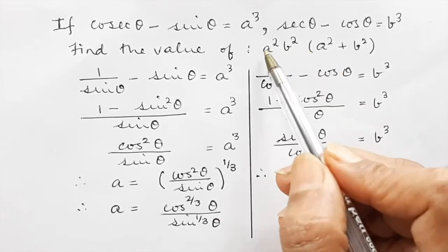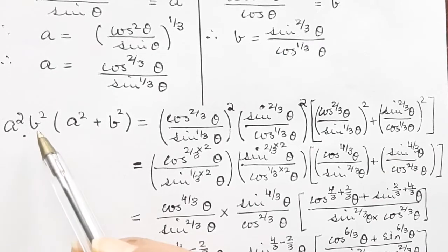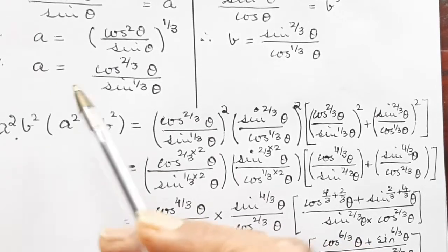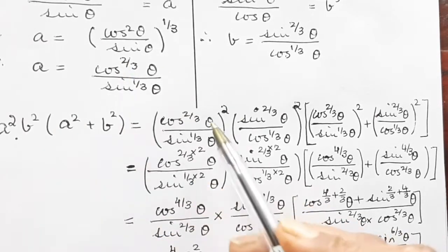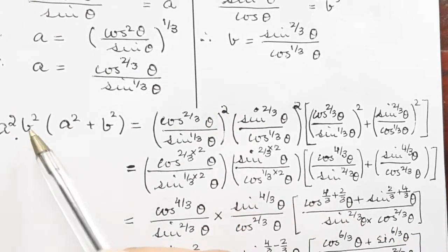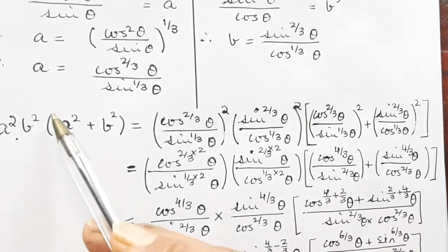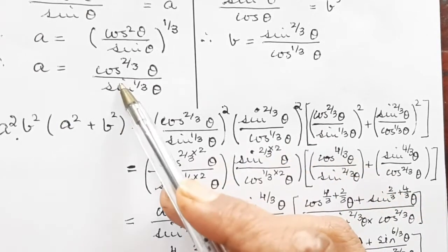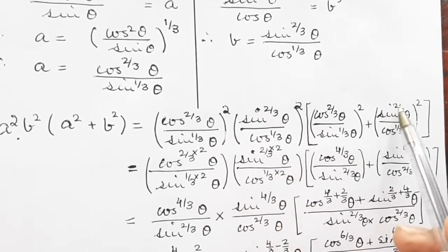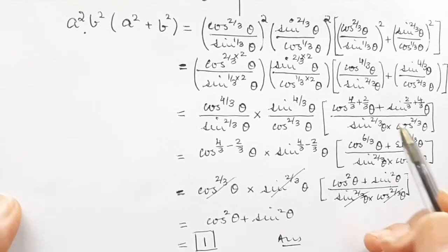Now we have to find the value of a²b²(a²+b²). We substitute: a squared is (cos^(2/3)θ / sin^(1/3)θ)², b squared is (sin^(2/3)θ / cos^(1/3)θ)², and inside the bracket we write a squared plus b squared using the same expressions.